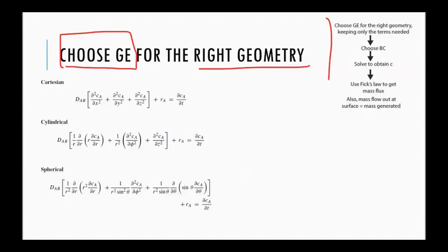As we go down these steps, the first one is choose the governing equation. So governing equations, at least what we have done, is in three different coordinate systems: Cartesian, cylindrical, and spherical.